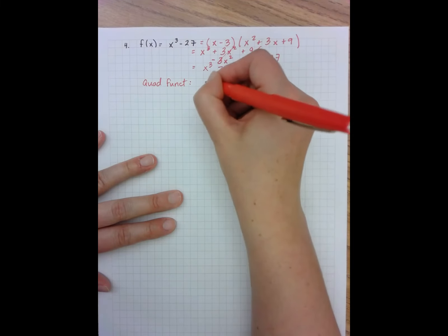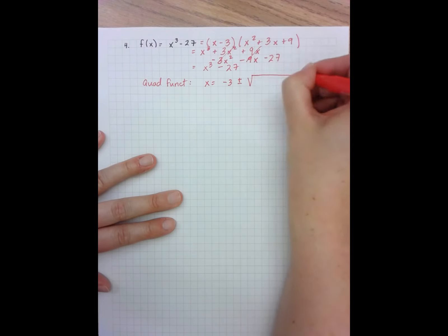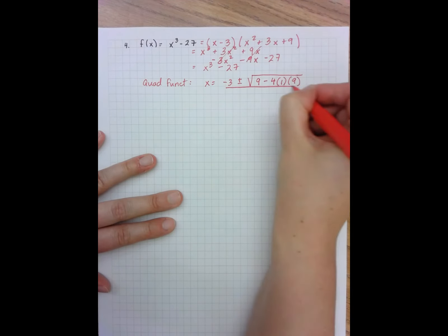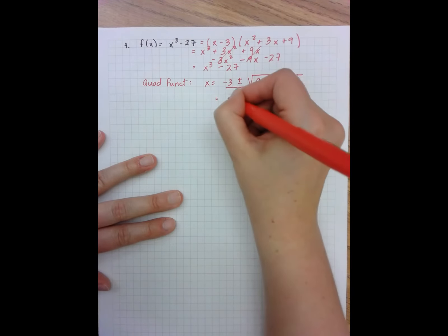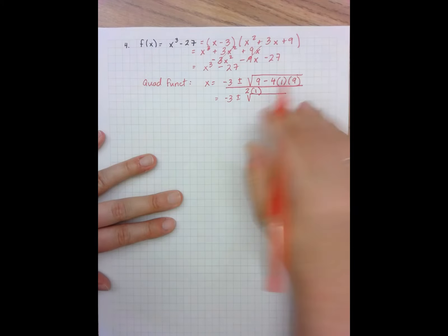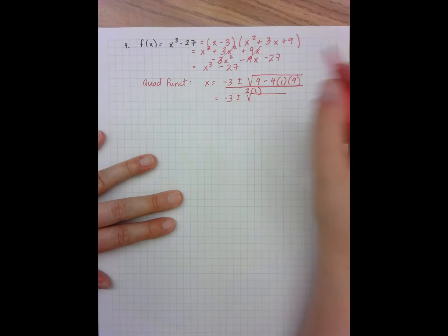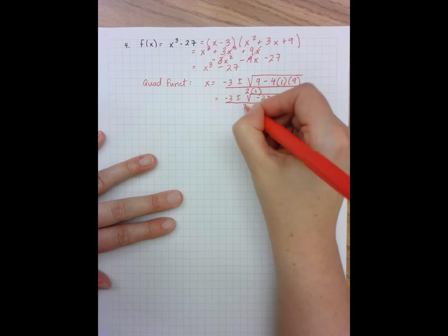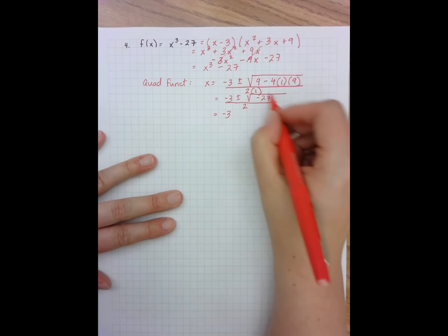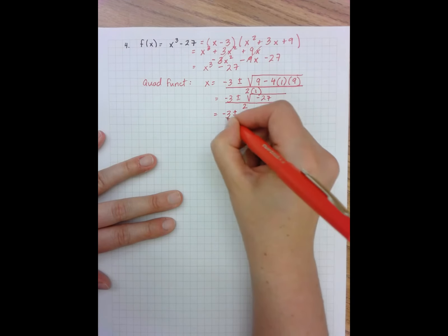I want to factor x squared plus 3x plus 9 further, but it's not factorable by simple methods, so I'll use the quadratic formula. I get x equals negative b plus or minus the square root of b squared minus 4ac, all over 2a. Plugging in: negative three plus or minus the square root of 9 minus 36, which is negative 27, all over 2. This simplifies to negative three plus or minus 3i times the square root of 3, all over 2.